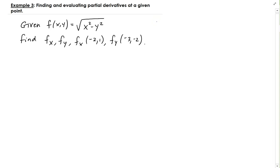In this example, we want to not only find the partial derivatives with respect to x and y, but we also want to evaluate those at the given points. This notation — f subscript x and f subscript y — is just another way of writing partial f with respect to x, and partial f with respect to y.